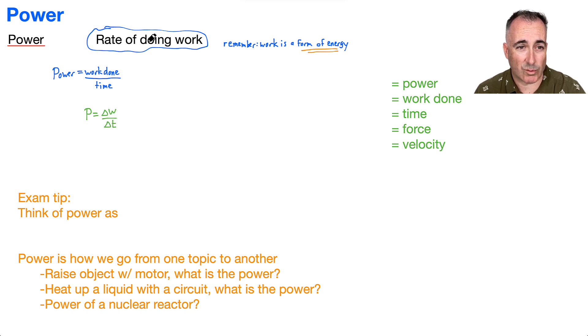By the way, that's the one that says rate of doing work, right? That's change in work over change in time. But there's also another version that goes just F times V, so the force times the velocity. This is the equation that you actually get in your data booklet.